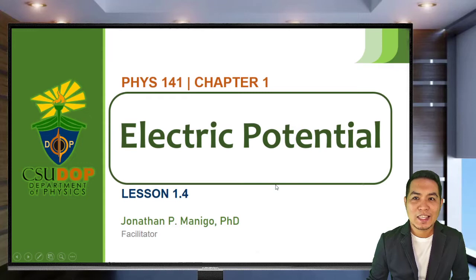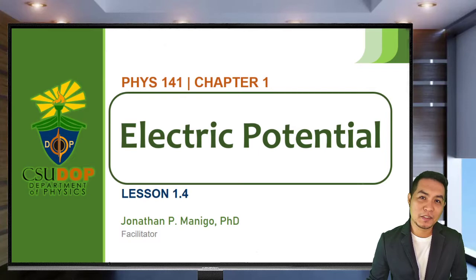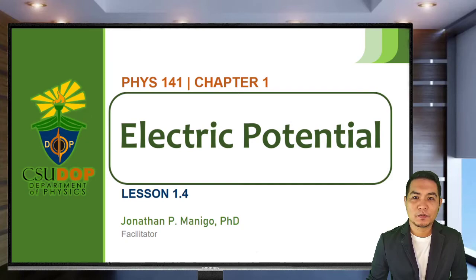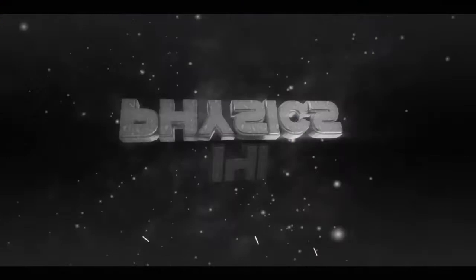For today's lesson, we will be discussing the electric potential. You may have already discussed this in your Physics 41 Basic Electromagnetism course. It is basically related to the electric field and the electric potential energy — you can think of electric potential as energy per unit charge. We will try to generalize how to find the electric potential of a charge distribution.